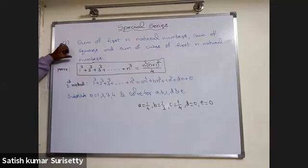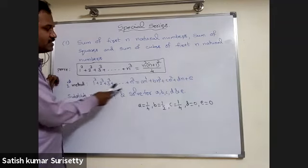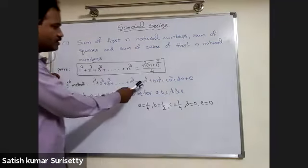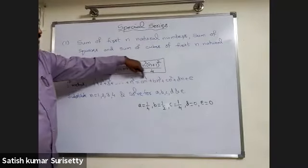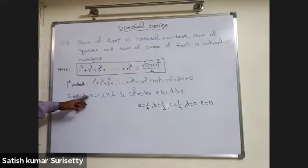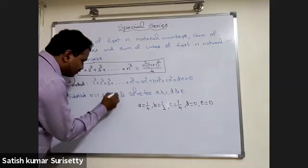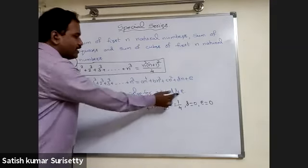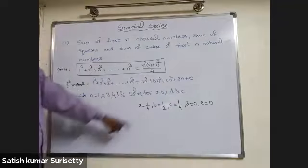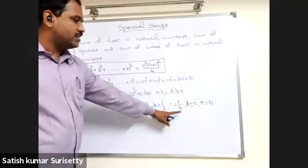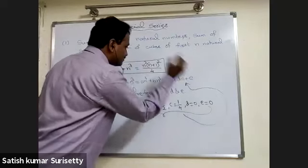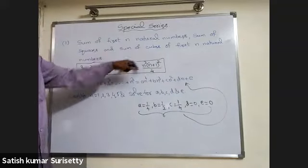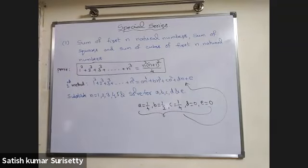Another method for sum of cubes of first n natural numbers: take it as a bi-quadratic, the general form of degree 4 — a n to the power 4 plus b n cubed plus c n squared plus d n plus e. We need to calculate five constants, so substitute n equal to 1, 2, 3, 4, and 5 and solve. Then a equals 1 by 4, b equals 1 by 2, c equals 1 by 4, d equals 0, and e equals 0. Substituting back gives n squared into n plus 1 whole squared upon 4.